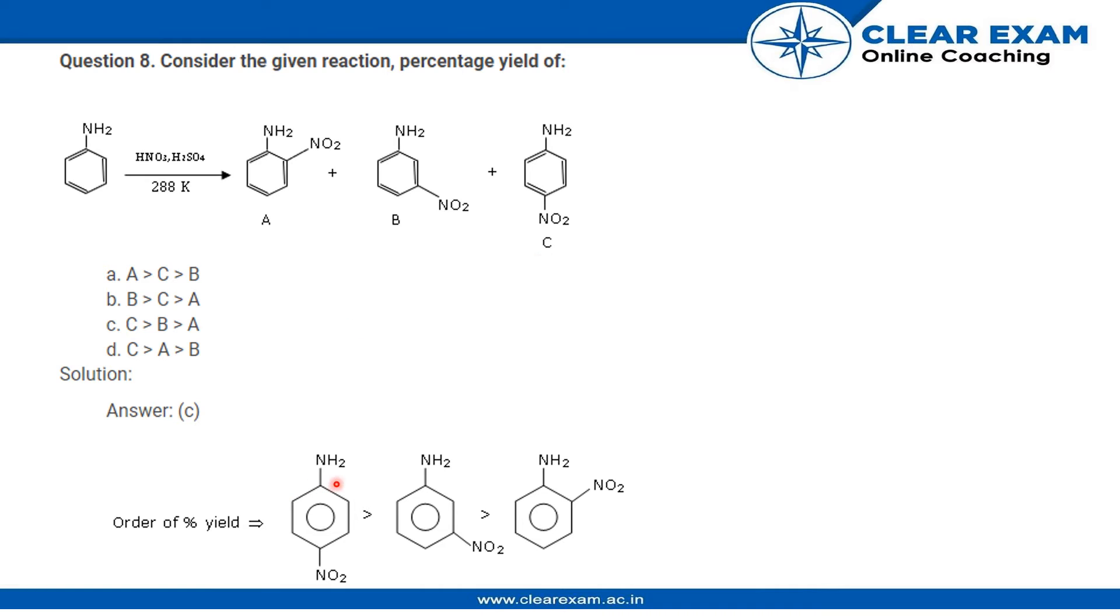Now since there is NH2 over here, that is a negative charge, the one at the tertiary will be the most stable. Therefore, C will be the most stable. Then we have the one at the secondary, that is B.